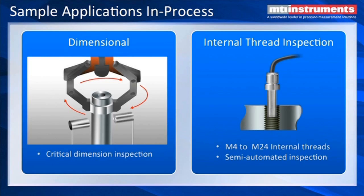Recently we've introduced a thread inspection system using an internal thread inspection probe with a ring around it that looks at a 360-degree displacement measurement as it's inserted into the threads. We can generate a profile as you insert the probe to make sure the threads are all there, it's the correct pitch diameter, and that the threads don't stop short of where you intended.